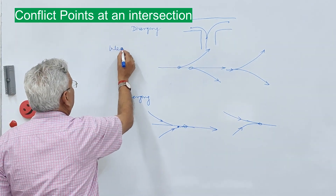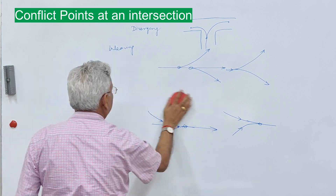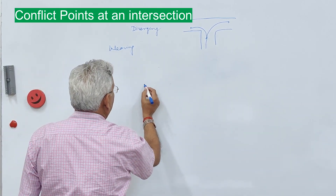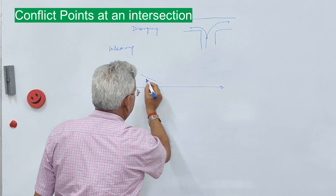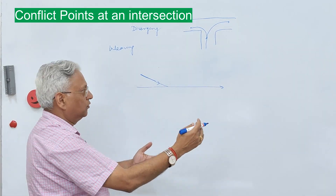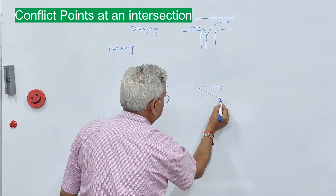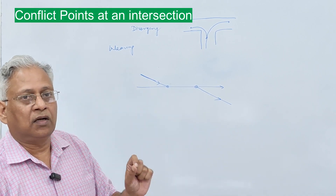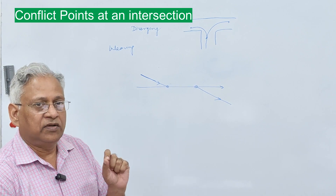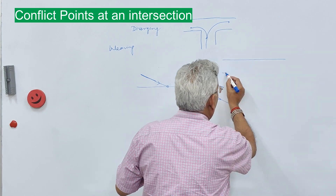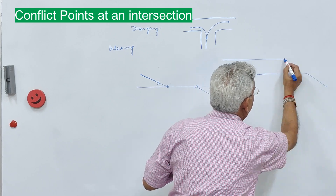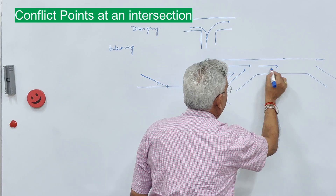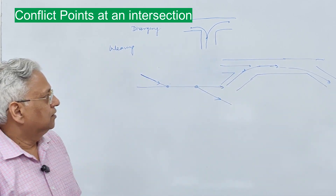The fourth type is weaving movement. Weaving movement occurs on expressways and on roundabouts when two traffic streams merge together and then diverge. A stream merges with another stream, travels along the highway for some length, and then diverges. That is the point of merge and the point of diverge — this is called weaving. Weaving is very prominent on roundabouts and on expressways when you have an on-ramp followed by an off-ramp.